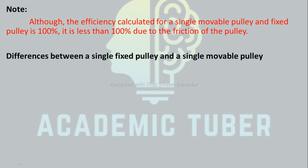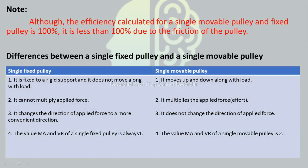Difference between single fixed pulley and single movable pulley. A single fixed pulley is fixed to a rigid support and does not move with the load, whereas a single movable pulley moves up and down with the load. A single fixed pulley cannot multiply the applied force, whereas a single movable pulley multiplies the effort applied. A single fixed pulley changes the direction of force to a more convenient direction, whereas a single movable pulley does not change the direction of force. In a single fixed pulley, the value of MA and VR is always 1, whereas in a single movable pulley, the value of MA and VR is 2.